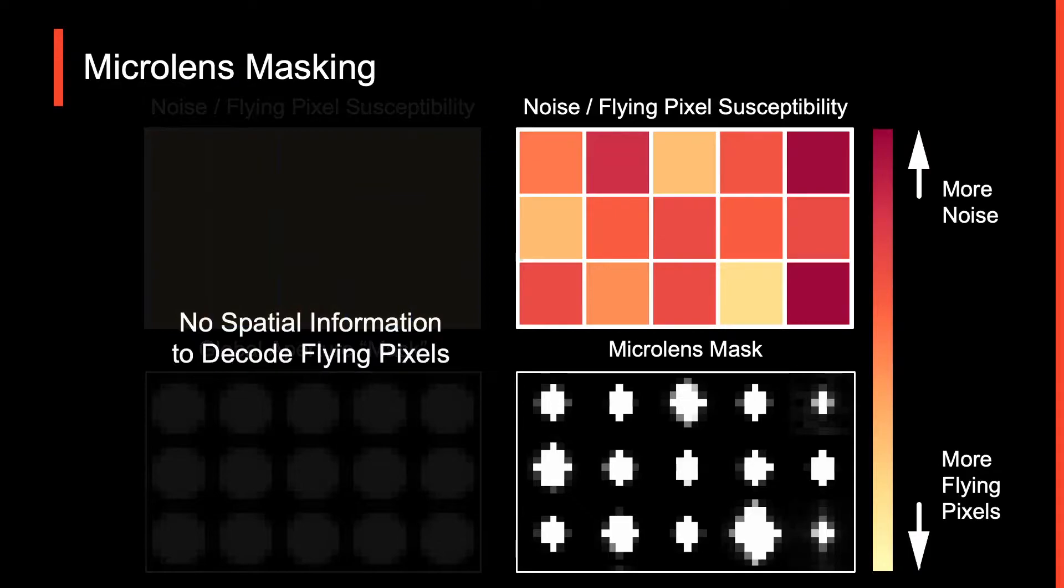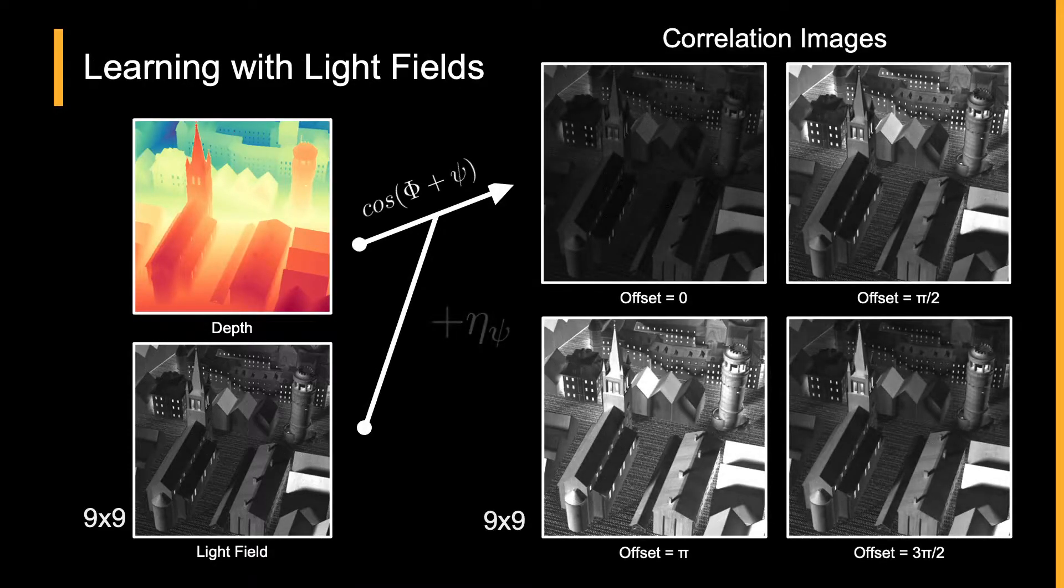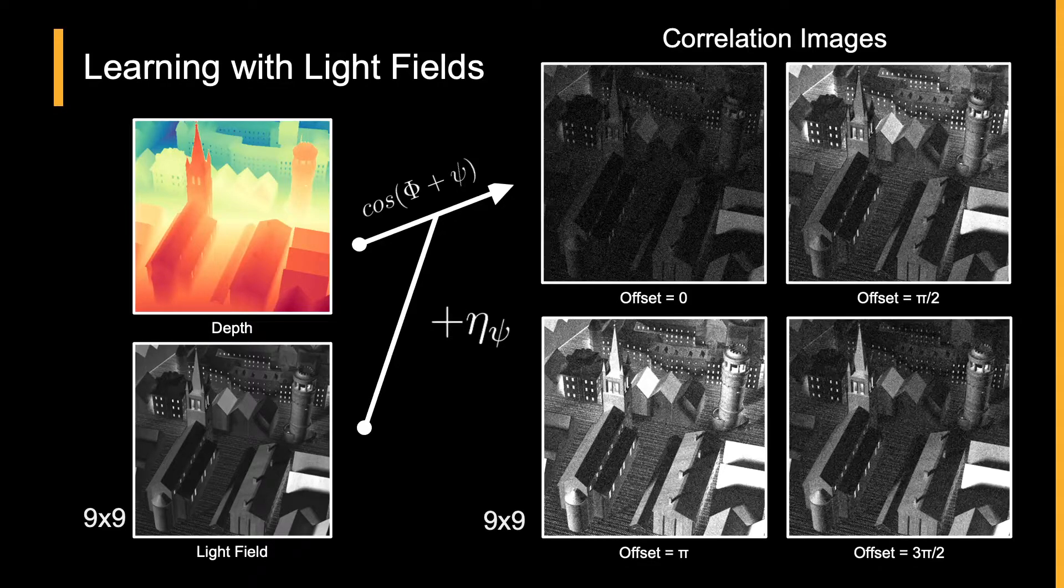Well, how do we get this mask, and where do we actually learn to decode this information? Well, first we need data. Given the input light field, we simulate a set of correlation measurements for each sub-aperture view, to which we add some very important simulated noise.